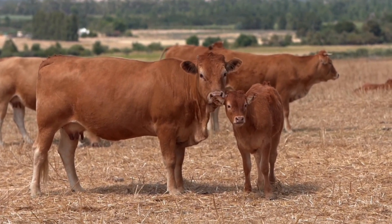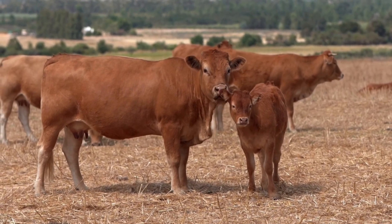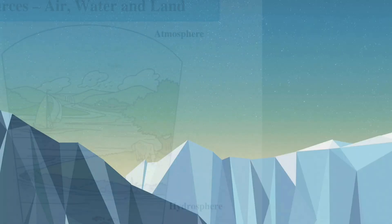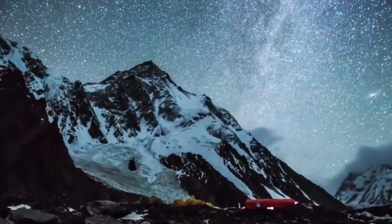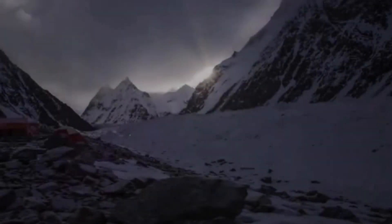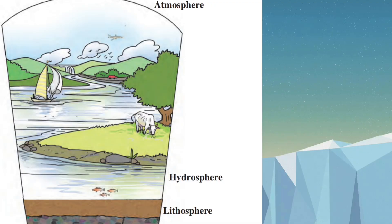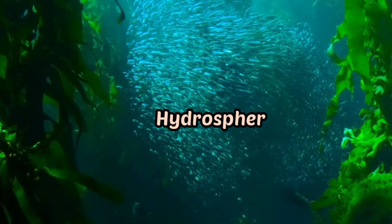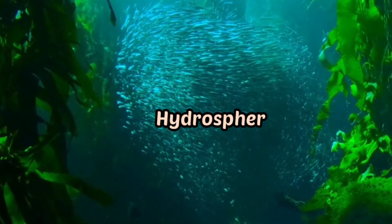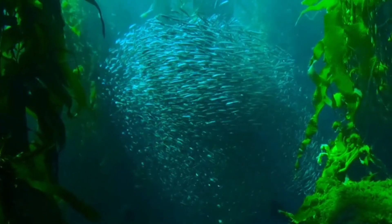These living things and the parts of the lithosphere, hydrosphere, and atmosphere which they occupy are together called the biosphere. These spheres have formed on the earth naturally. We have learned all this in the previous standard.